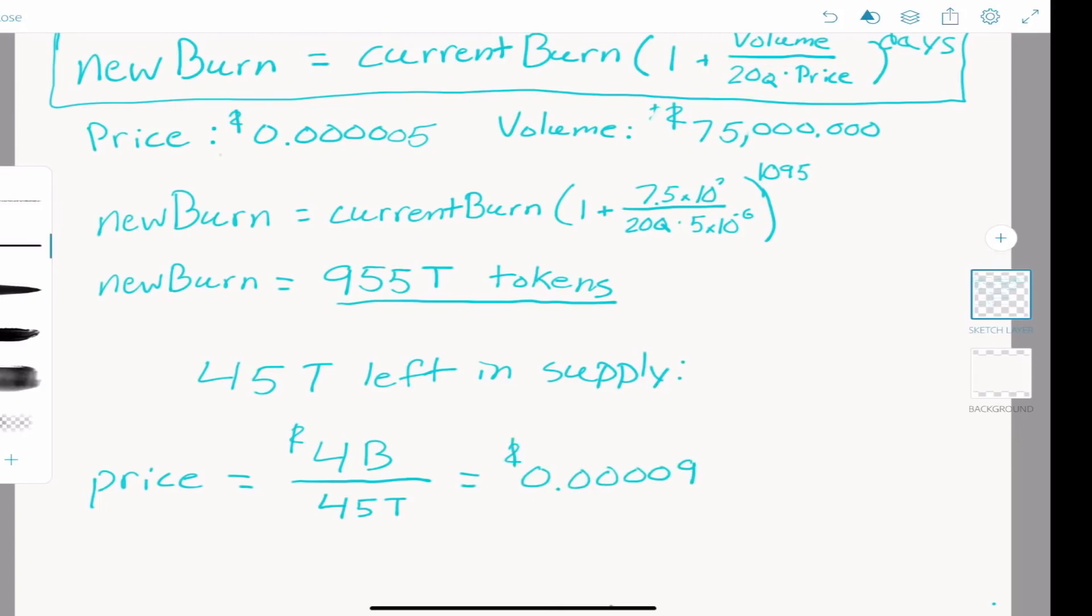That's 18 times higher than it is right now, even if we do not grow at all as a community or a company. Just from low daily volume, we will see the supply shrink incredibly low if the price stays at these low levels.